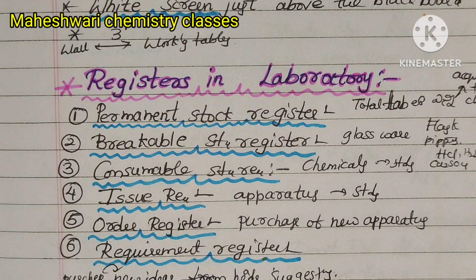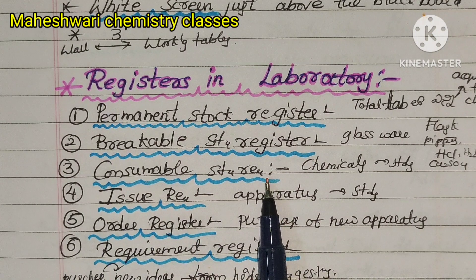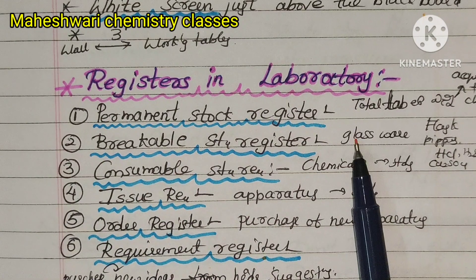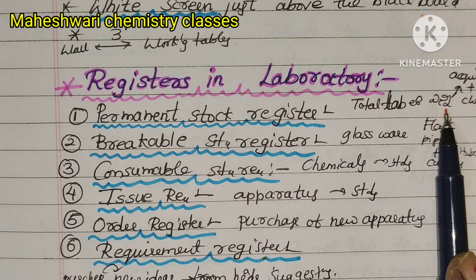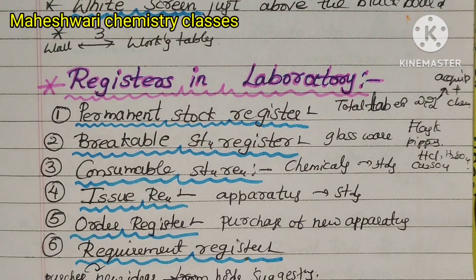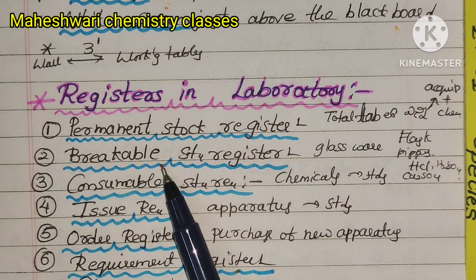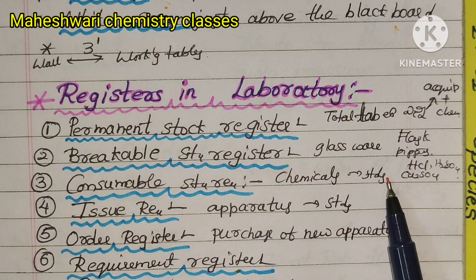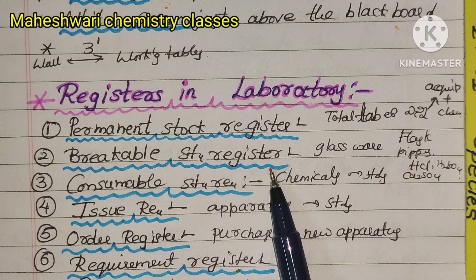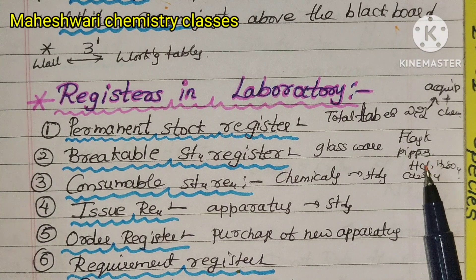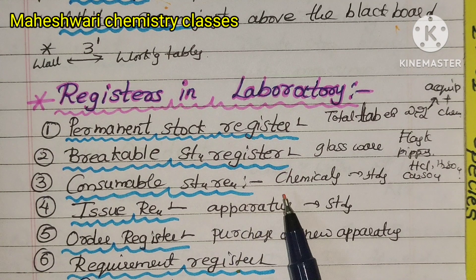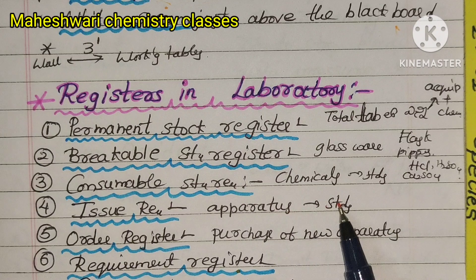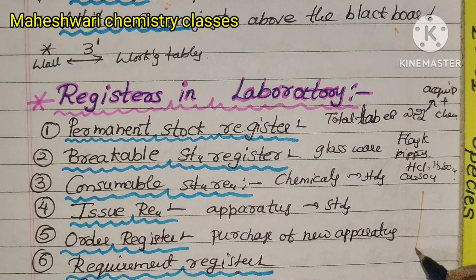Registers in the laboratory: permanent stock register, breakable stock register, consumable stock register, issue register, order register, and requirement register. The permanent stock register covers all items in the lab. The breakable stock register is related to glassware such as pipettes and beakers. The consumable stock register is related to chemicals. The issue register records items issued when students come for practicals, for example titration equipment like burettes and conical flasks.